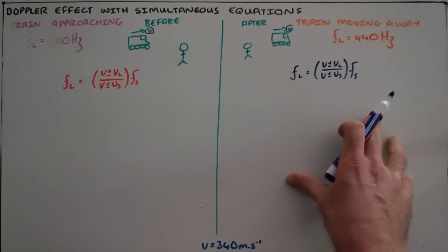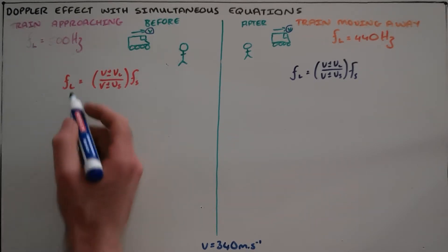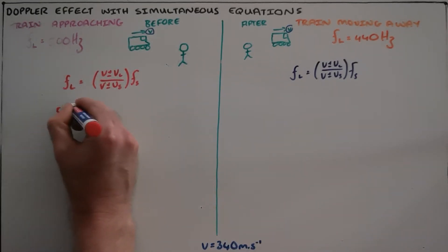So we apply the Doppler effect twice. The first time for the train approaching, where we say when the train is approaching, the observer observes a frequency of 500 Hertz as given.